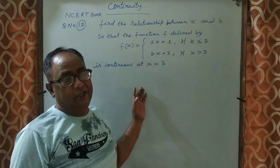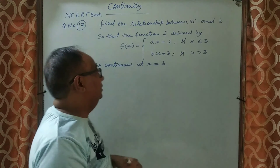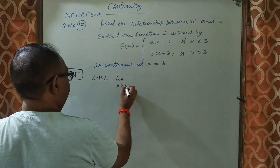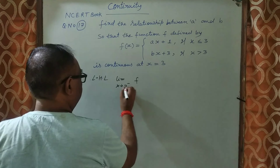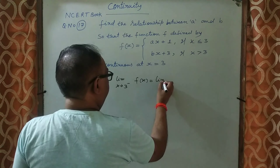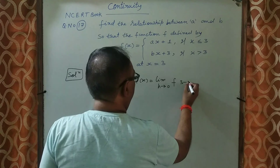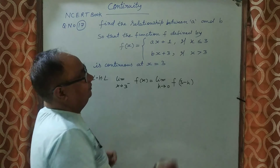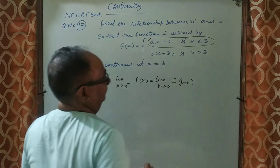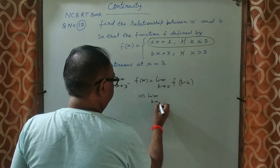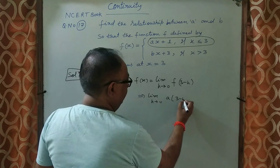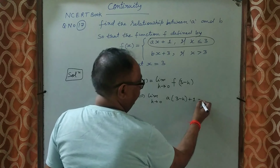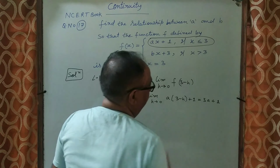If we have these three equal, then we will get the values of a and b. For the left hand limit: limit x tending to 3⁻ of f(x) equals limit h tending to 0 of f(3 − h). Since (3 − h) is less than 3, we use the first piece ax + 1. Substituting x = 3 − h and letting h → 0 gives us 3a + 1. So LHL = 3a + 1.